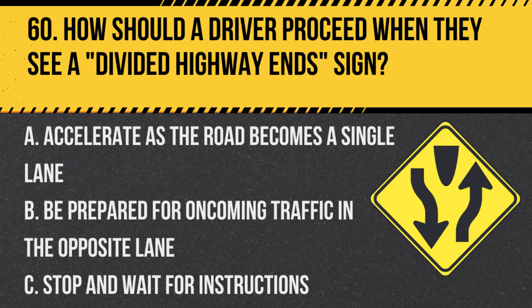Question 60. How should a driver proceed when they see a divided highway end sign? A. Accelerate as the road becomes a single lane. B. Be prepared for oncoming traffic in the opposite lane. C. Stop and wait for instructions. Answer: B. Be prepared for oncoming traffic in the opposite lane. This sign indicates that the road will no longer be divided, so drivers should be cautious of oncoming traffic.